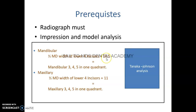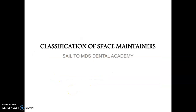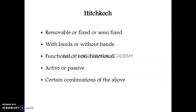Prerequisites for space maintenance include a radiograph, impression, and model analysis. In the Tanaka-Johnson analysis for the mandibular arch, you add 10.5, and for the maxillary arch you add 11. The formula is: one-half of the mesiodistal width of the lower four incisors plus 10.5 gives mandibular teeth sizes, and plus 11 gives maxillary teeth sizes.